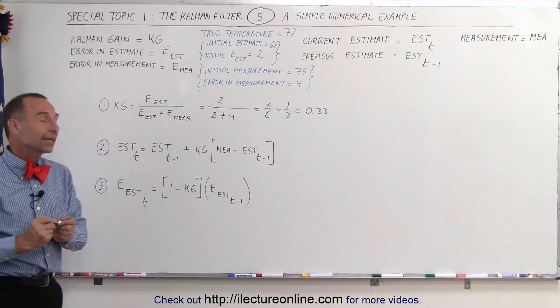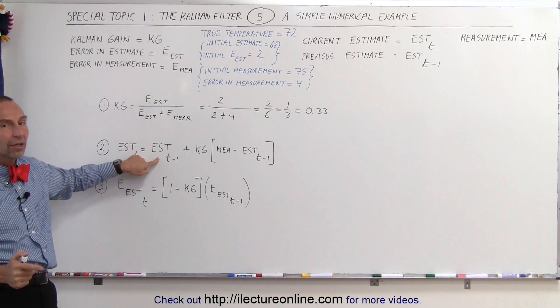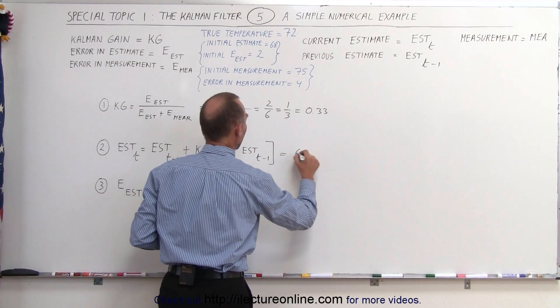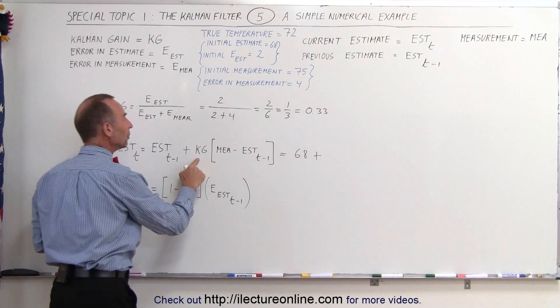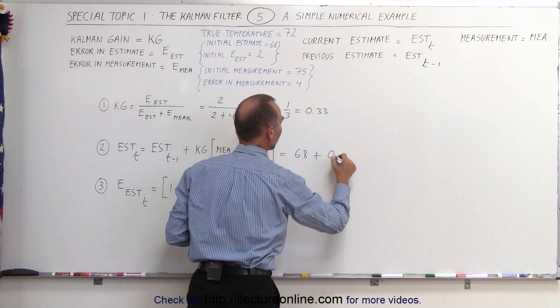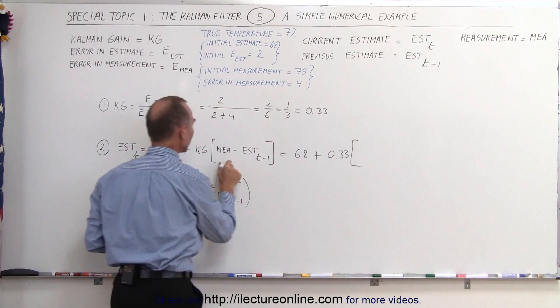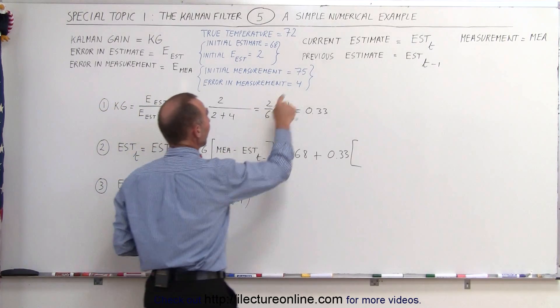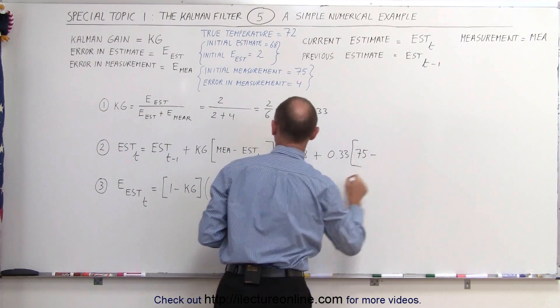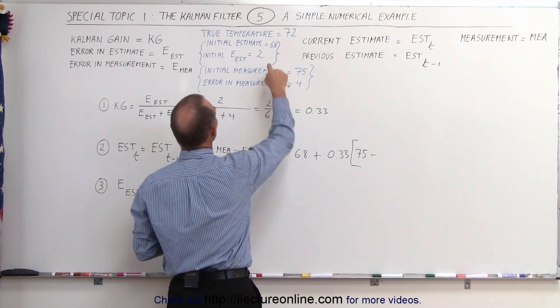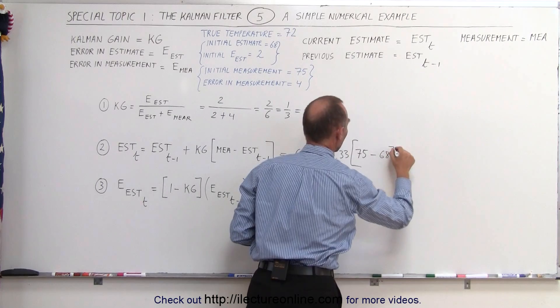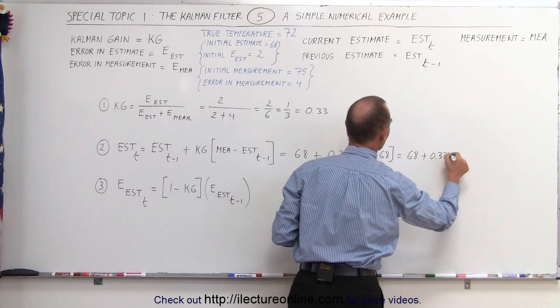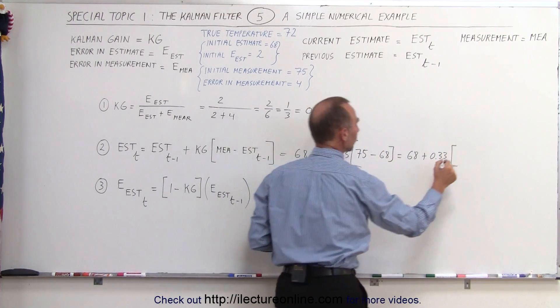The next thing we're going to do is calculate the current estimate based upon the previous estimate. Now the previous estimate is going to be the initial estimate that we have, so in this case that is going to be equal to 68, plus the Kalman gain which we calculated in the previous calculation, 0.33, times the difference between the measured value and the previous estimate. In this case that's going to be our initial estimate, so the measured value was 75, minus the old estimate, or the initial estimate of 68. So this is going to be equal to 68, plus 1 third, or 0.33, times the difference between these two, which would be 7.